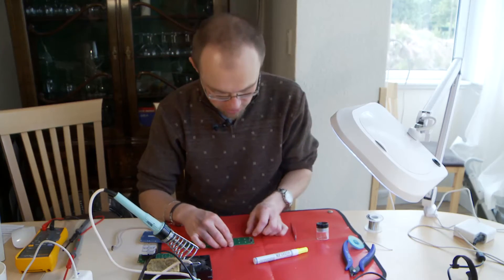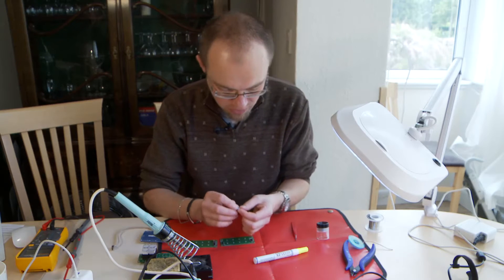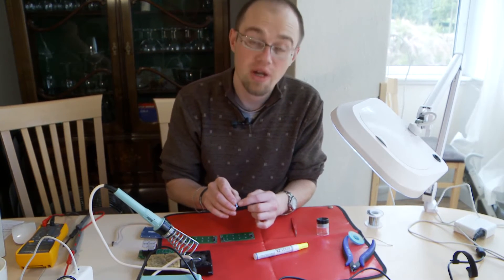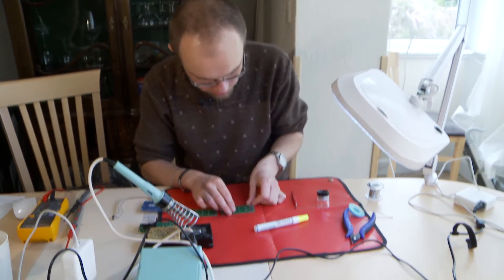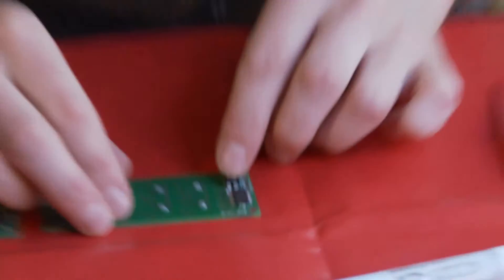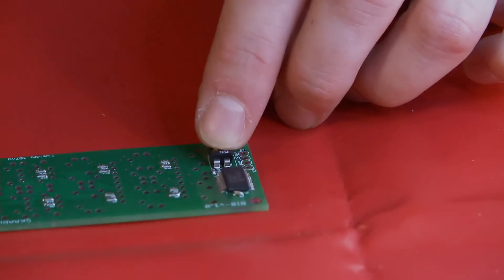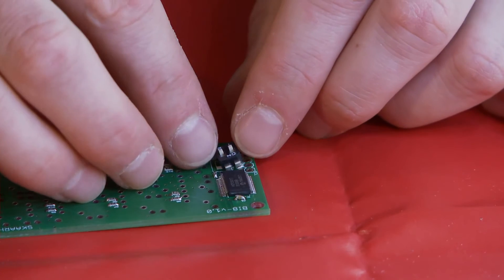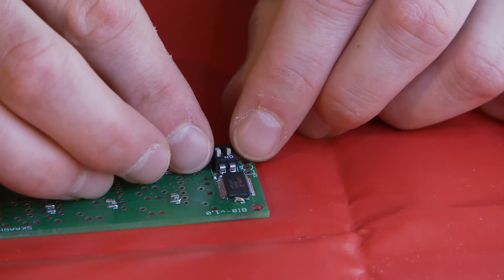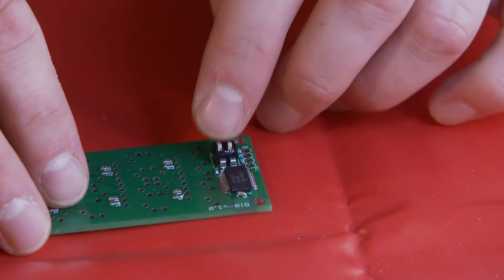Now it is time to solder a small switch with the two micro switches on the board which we use to configure the address of the board. And it is the same procedure and it is easy to solder here on its place.